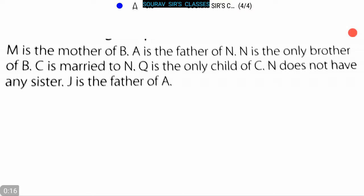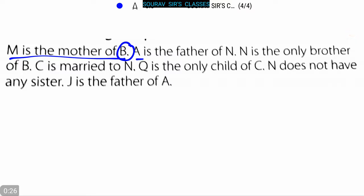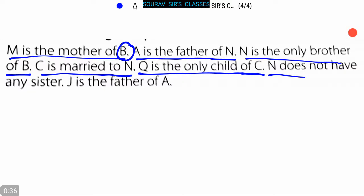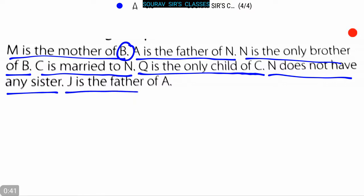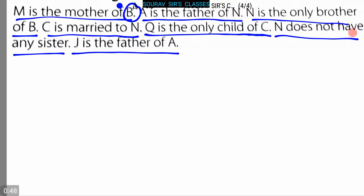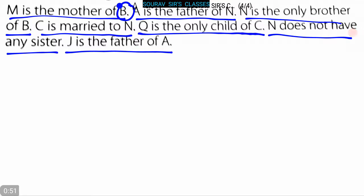Let's read the information very carefully. M is the mother of B. A is the father of N. N is the only brother of B. C is married to N. Q is the only child of C. N does not have any sister, and J is the father of A.